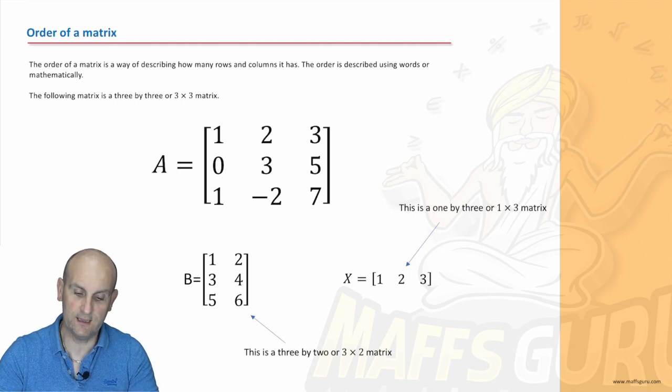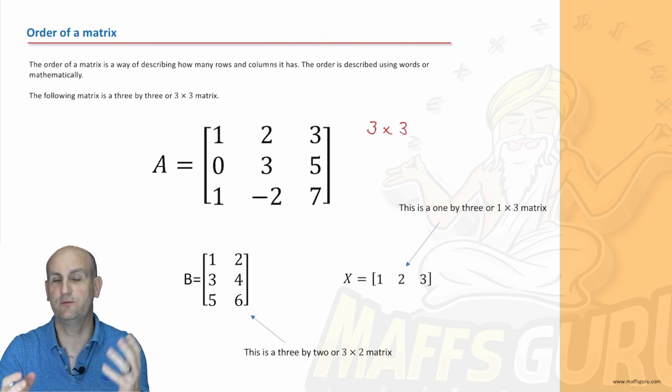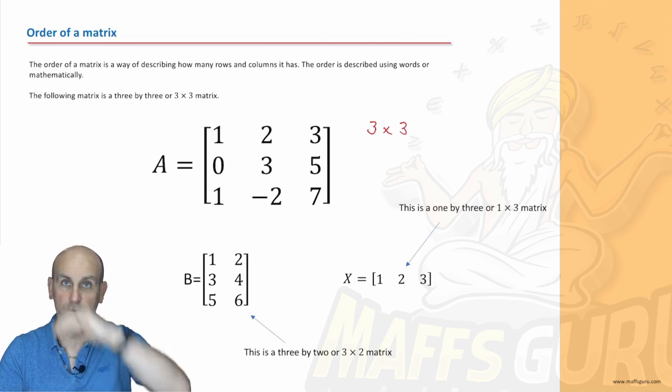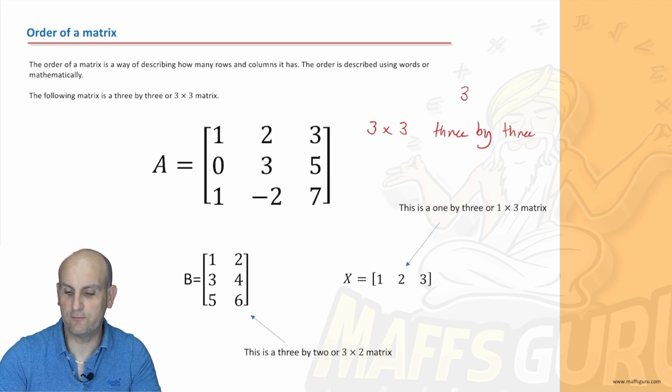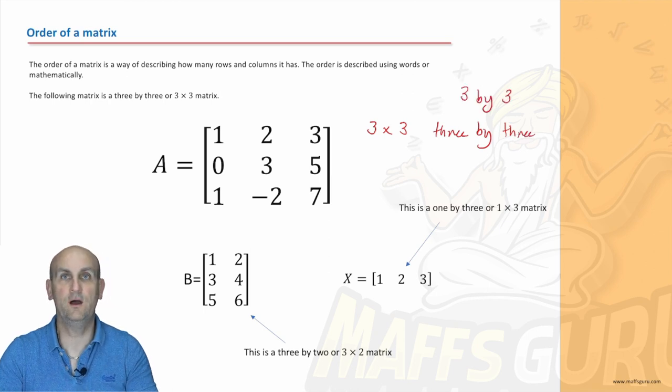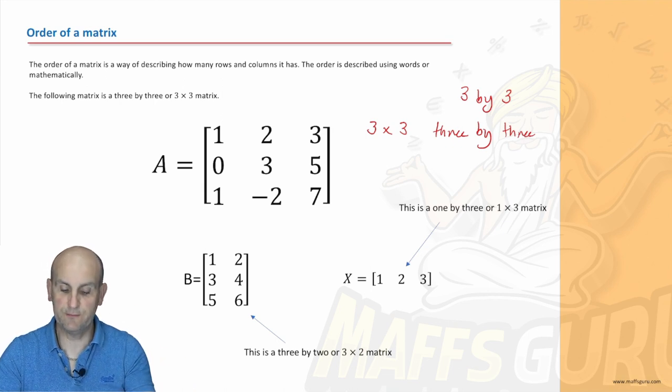Okay. But the point of it is we talk about matrices as the number of rows followed by the number of columns. Now, we could, for example, call this one here a 3 by 3 matrix. Right? So, 3 with a kissy kissy 3 is a 3 by 3. 3 rows by 3 columns. Or, we could write the words 3 by 3. Or, I've seen it 3 by 3 as well. Either way, just remember that that's rows followed by columns.